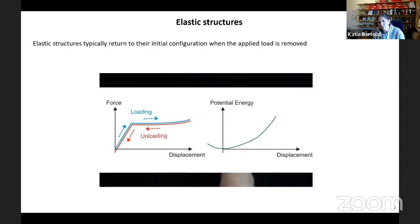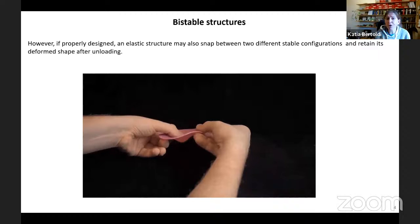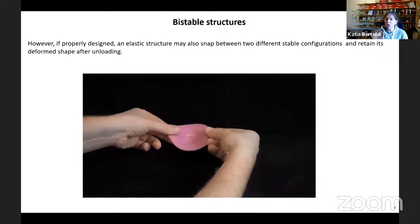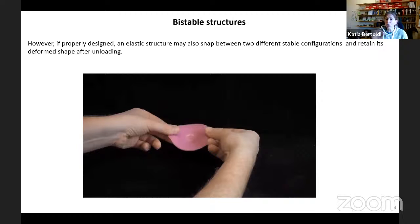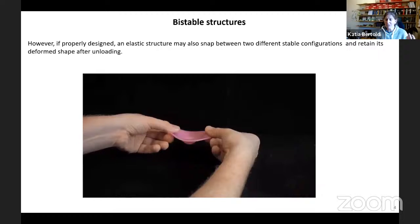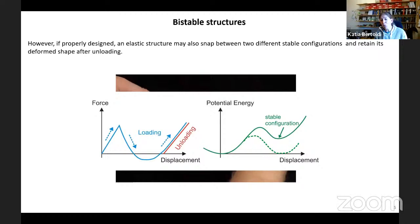However, what has been known in the physics and mechanics community for a long time is that if you carefully design the geometry, you can realize structures that snap between two stable configurations. Here you can see an example — this thin shell has a dome shape. We poke it, it inverts, and then it stays there — it's not snapping back. You retain the shape after unloading. This has been studied by the physics and mechanics community, with emphasis on understanding which geometry leads to this property — specifically the geometry leading to an energy landscape with multiple wells, meaning multiple stable configurations.